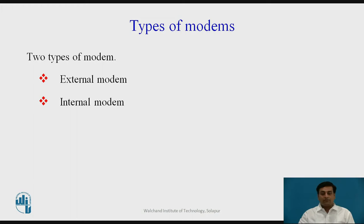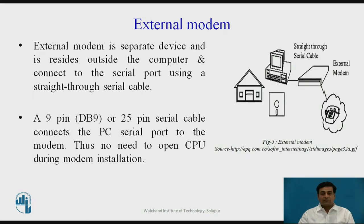There are two types of modems: external modems and internal modems. The first type is the external modem. As seen in the figure, the external modem resides outside the computer, next to the computer, and is connected to the computer via a straight-through serial cable. The modem is connected to the telephone line. An external modem is a separate device that connects to the computer using a serial port with an RS-232 standard cable — a 9-pin or 25-pin serial cable connects the serial port to the modem, so you do not need to open the CPU for modem installation.